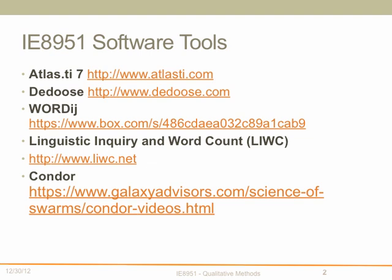First and foremost, Atlas TI7, which is really the mainstay in qualitative research. DEDUCE, a new web-based qualitative software that you can use on the cloud, especially very useful for teams who want to share their data amongst one another. Wordage, an analytic for text. Linguistic Inquiry and Word Count, another text profiling tool. And finally Condor, a very multi-purpose tool for analyzing email, web, Wikipedia, Twitter and more. I'm going to go through one at a time and give you additional links where you can download and install the software.